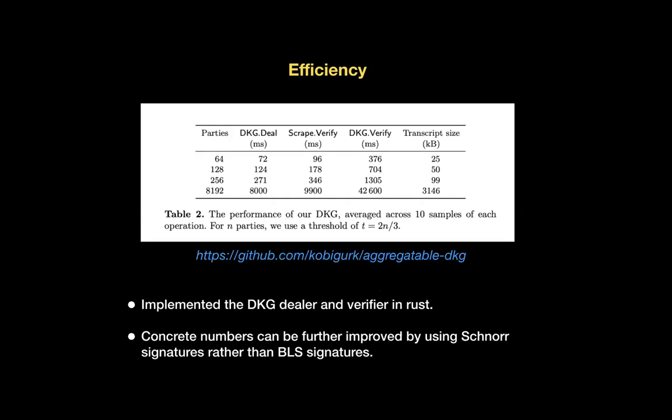We have implemented the actual algorithms of our DKG — the dealing and the verification — and find that the transcript size, verification, and dealing are all linear in the number of parties. We think we could improve these numbers further using Schnorr signatures rather than BLS signatures, but BLS made the security proof easier, so we went with the easier proof rather than the fastest scheme.